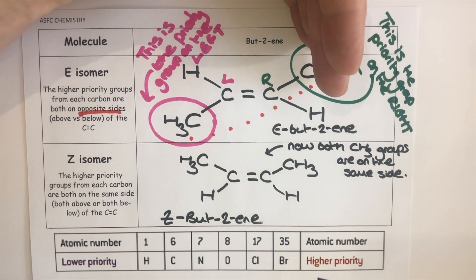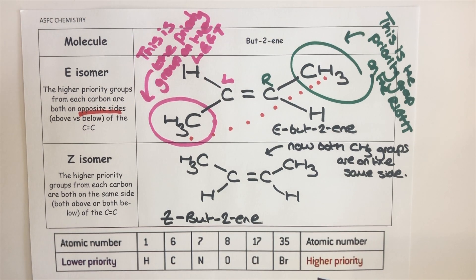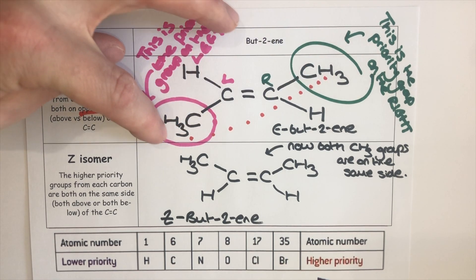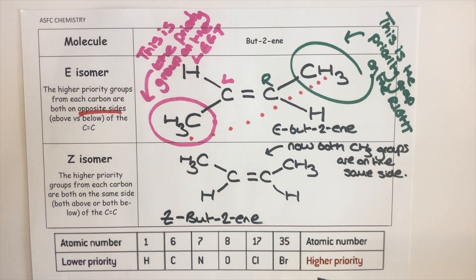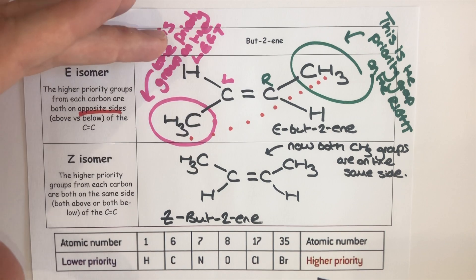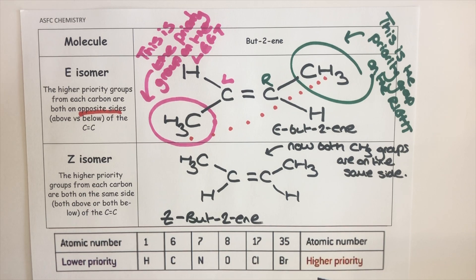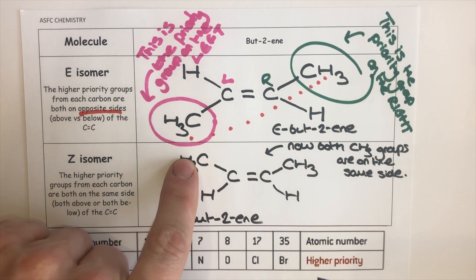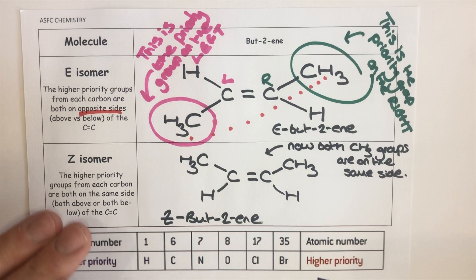I then do the same for the right-hand carbon, completely ignoring the left, and assign that CH3 as the high priority group on the right-hand carbon. Because these two high priority groups are across from each other — one on the top side, one on the bottom — this is an example of an E isomer. If, before the bond was created, one side had been flipped over, both CH3 groups would be on the same side. With both high priority groups on the same side, that would be the Z isomer.